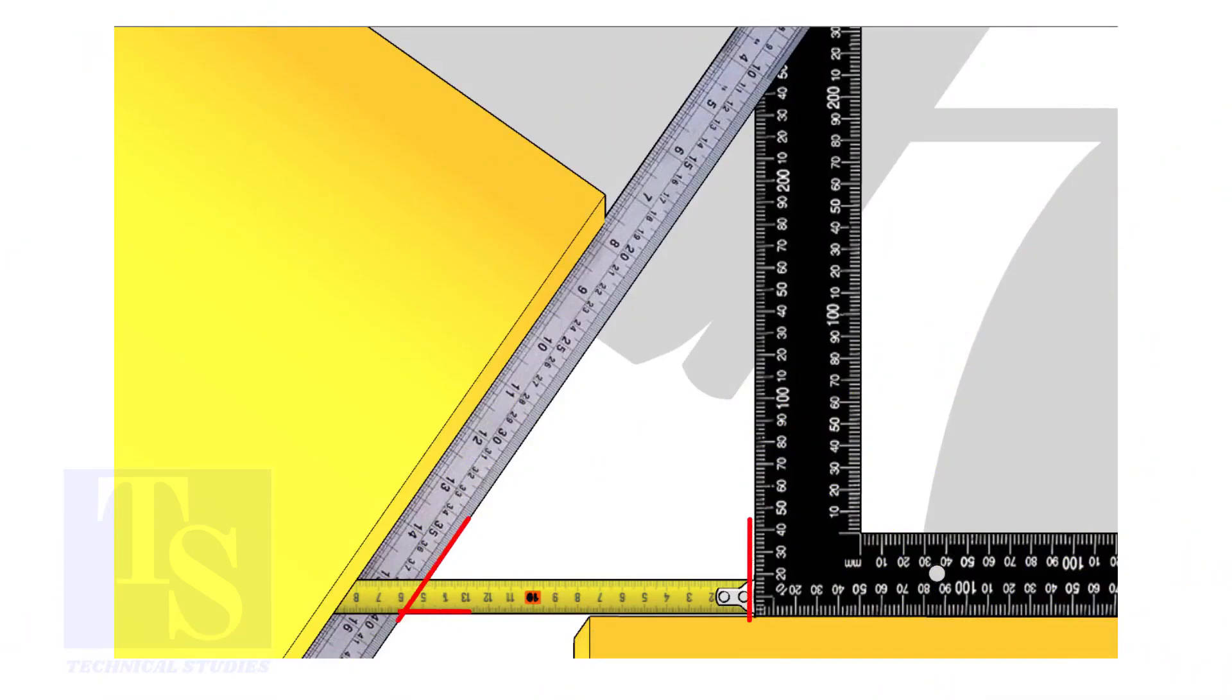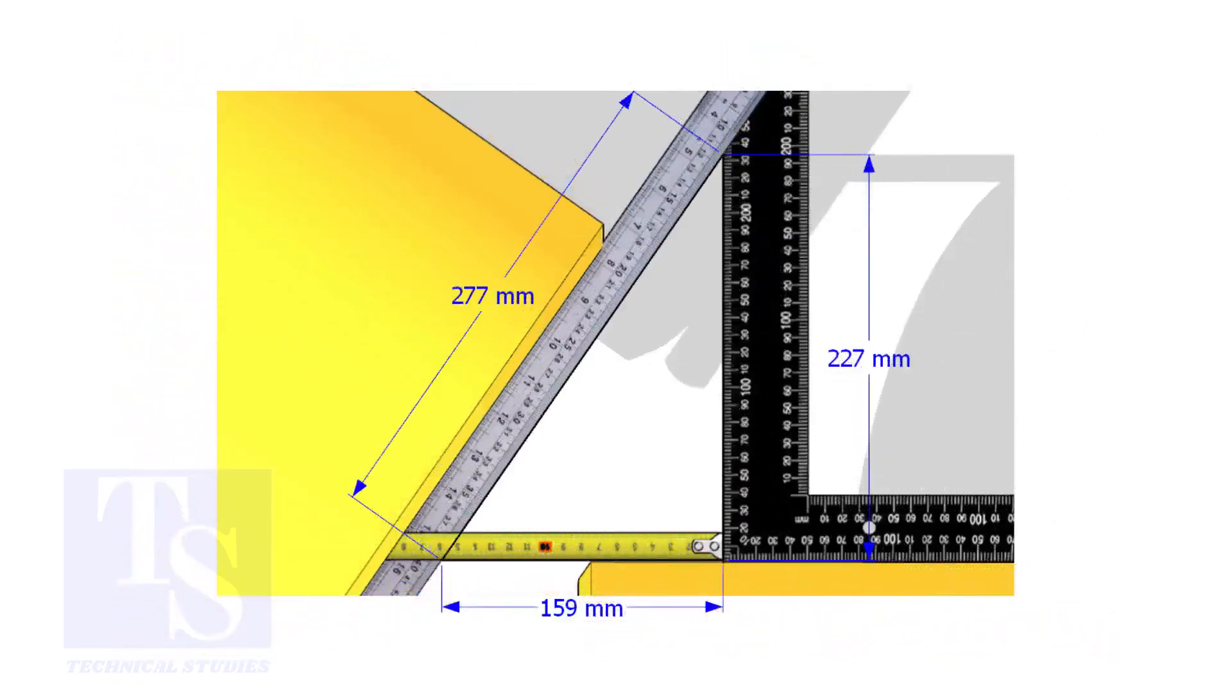Measure and note down the dimensions of the triangle. Assume that these are the dimensions. Let us calculate the including angle.